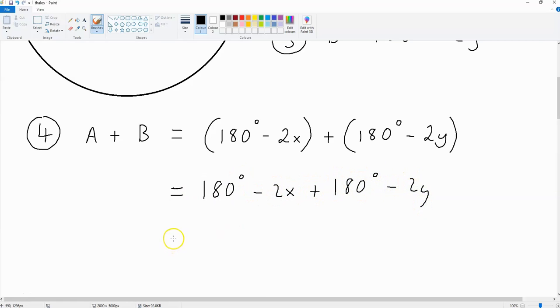this is the same as 360 degrees, because we've got 180 degrees over here and 180 degrees over here, minus 2 times x plus y.